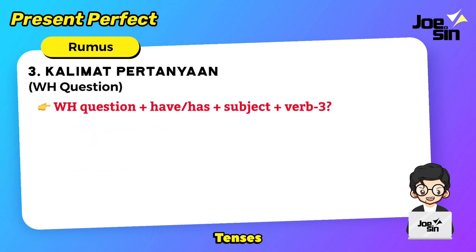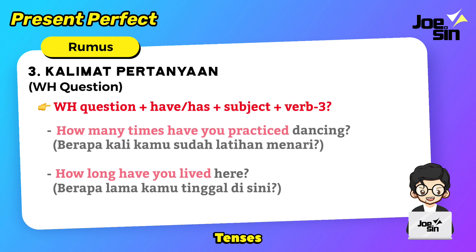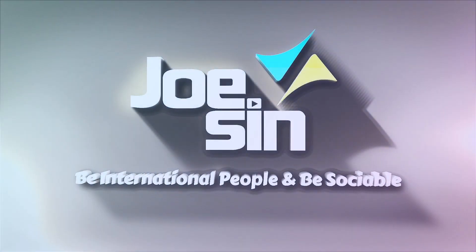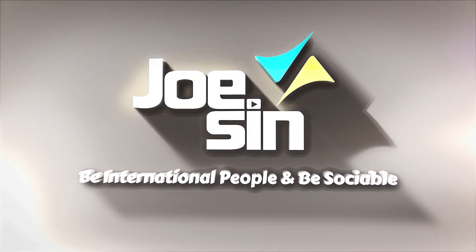Dan selanjutnya WH question — pertanyaan yang lebih informatif menggunakan kata tanya. Contohnya: how many times have you practiced dancing? — berapa kali kamu sudah latihan menari? How long have you lived here? — berapa lama kamu tinggal di sini? Itu semua adalah konteks yang komplit berkenaan dengan penggunaan present perfect tense. What do you think? It's easy, isn't it? Kita akan ketemu lagi di video yang lain. Jason akan berikan semua materi bahasa Inggris lengkap buat kalian. See you in the next video. Bye!